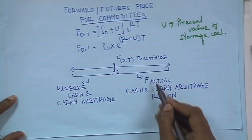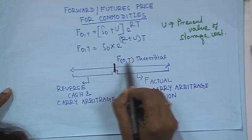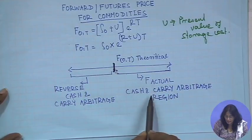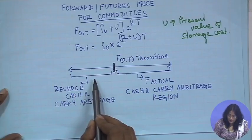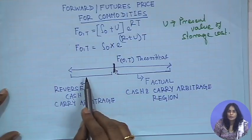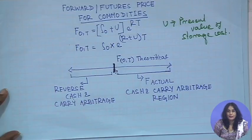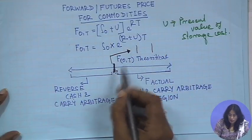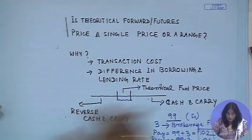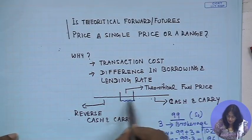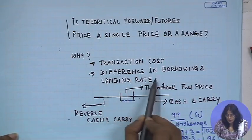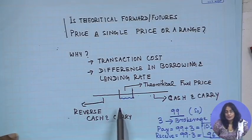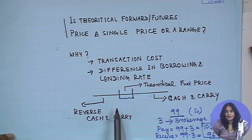This detail shows our theoretical price. If F actual is to the right — i.e., more than the theoretical price — we will have cash and carry arbitrage. If the actual price is less than the theoretical price, we will have reverse cash and carry arbitrage. But in real life, this is not a single price point; it varies within a range. It will be a range because of transaction costs and also because of the difference between borrowing and lending rates.